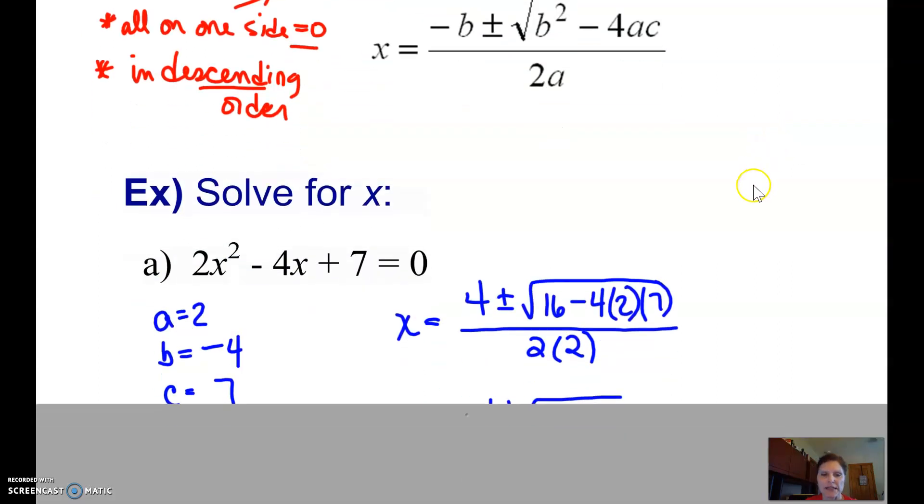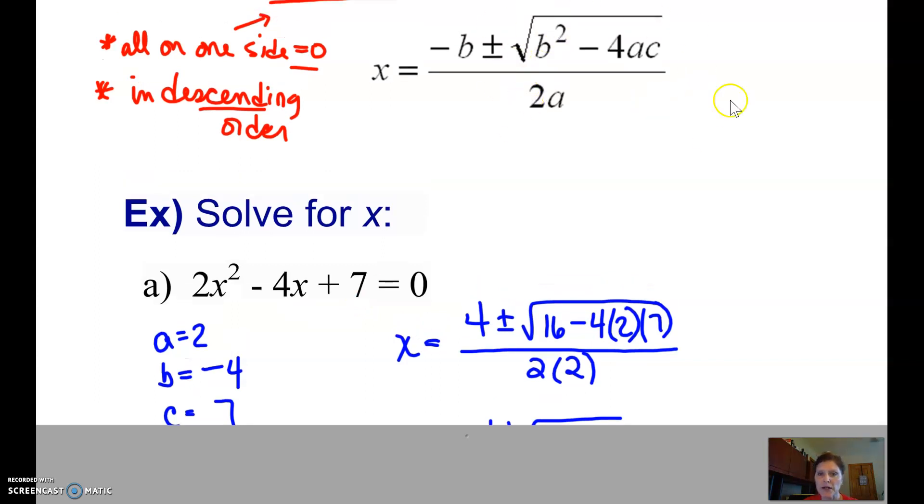Let's use it in an example. Here I have 2x squared minus 4x plus 7 equals 0, so A is what's in front of x squared, B is what's in front of x, including the sign, and C is that constant term. We put that into this formula up here.